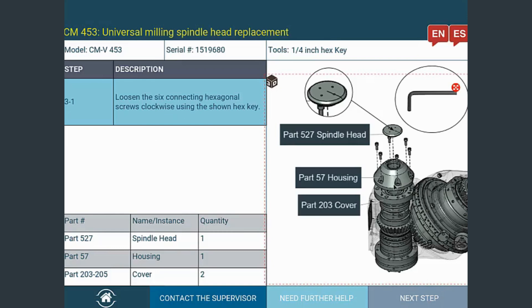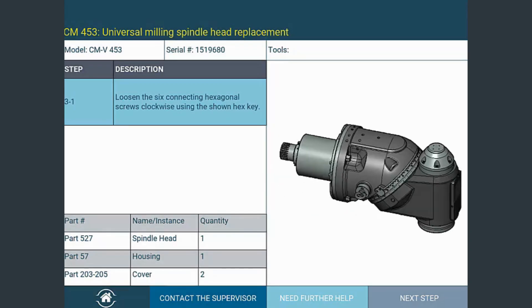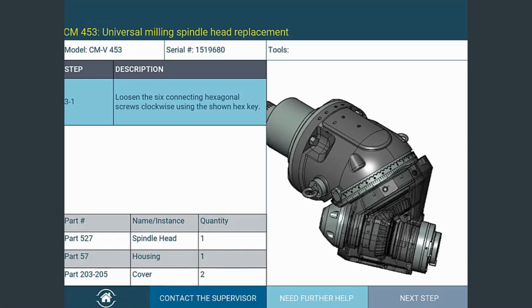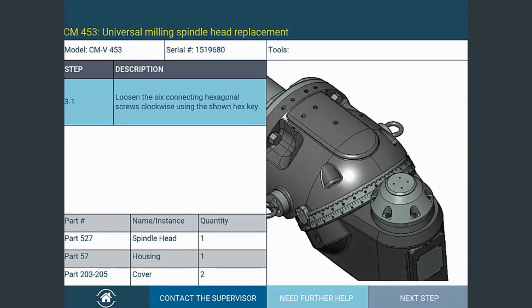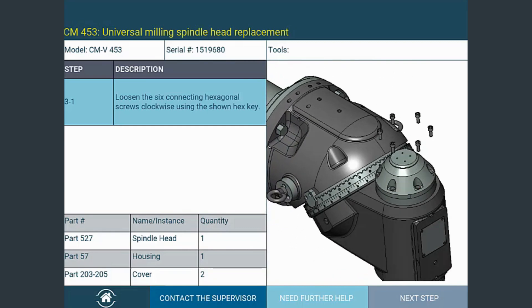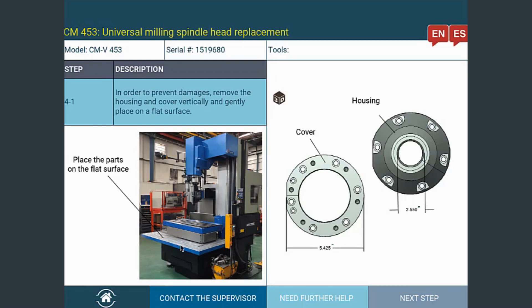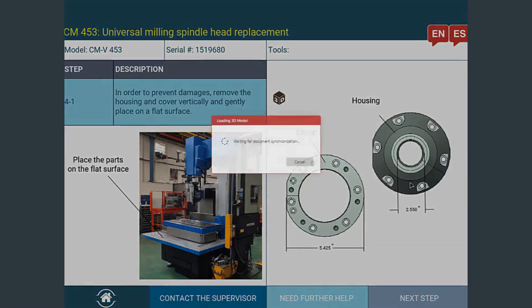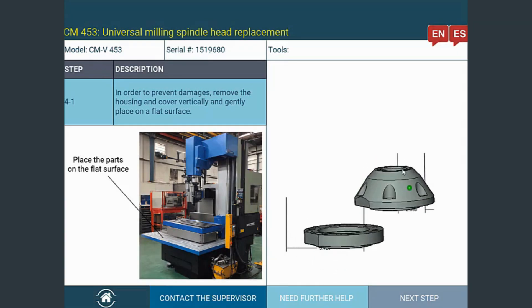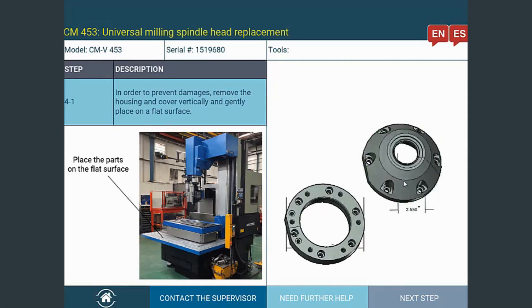Now, if he wants to ensure that he followed the correct order in this step to perform the task, he can click on this interactive button anytime to prompt a detailed animation created within Envision using this assembly. In this next step, Adrian sees only the relevant 3D view of the parts, enabling him to focus on identifying and safely placing them on the surfaces shown on the page with annotated locations.